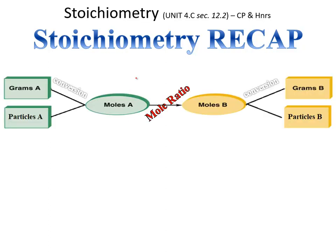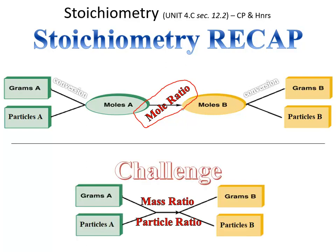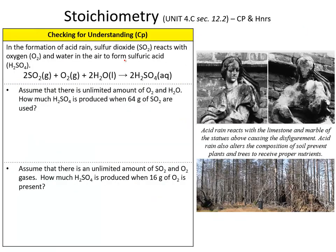Let's recap real quick. Essentially, you can break down stoichiometry using mole ratios — mole ratio is the easiest way to do this. You can convert from one substance to another. Or if you want, you can skip all these conversions and use a mass ratio if you're going from grams to grams, or a particle ratio if you're going from particles to particles. I have two problems here I want you to try out regarding stoichiometry with mass. If you have any hard times with them, hit me up in the tutorial. Thanks.